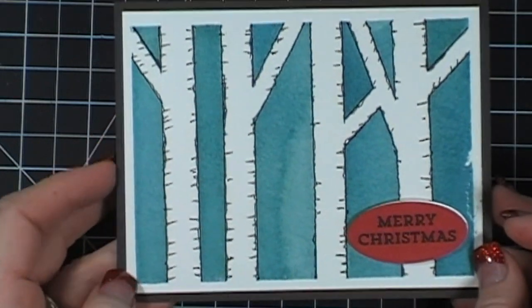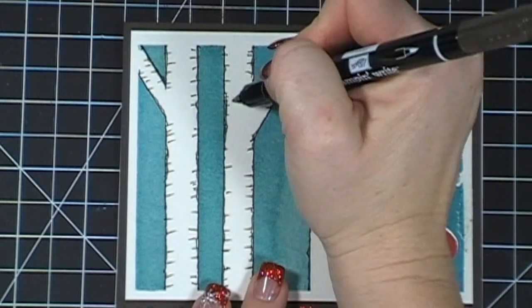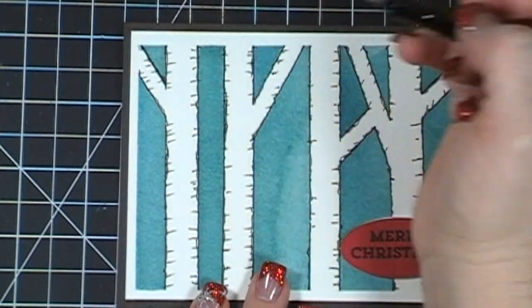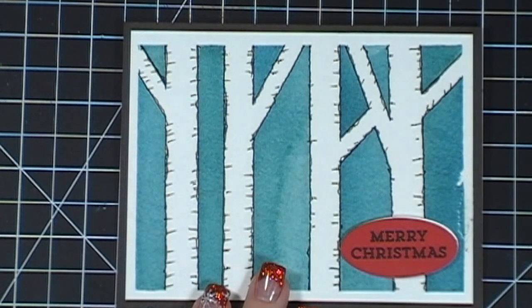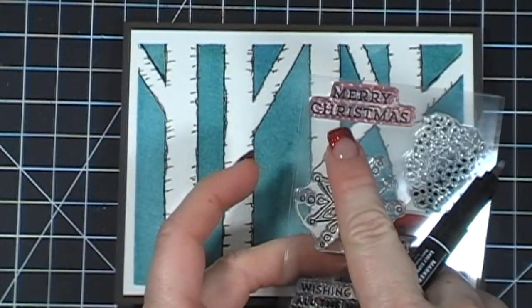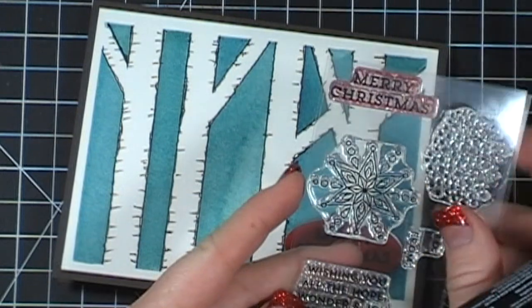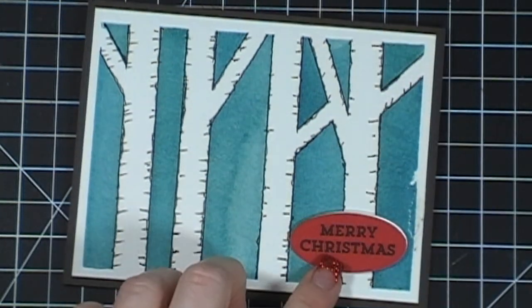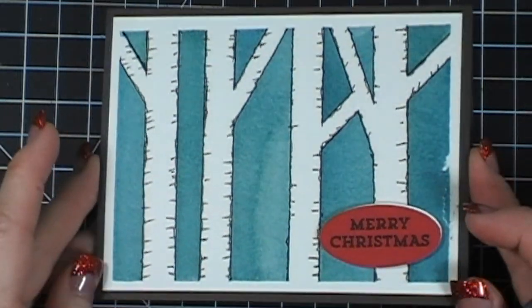Isn't that beautiful? I love it. I love how it turned out. And like I said, that's all I did is I just went into each one of those and made the little squiggles and made the little lines. And then this sentiment is from the Paper Pumpkin stamp set for this month. I love this stamp set. There's a Merry Christmas stamp, and so I stamped it on red and put it there. And that's it, that's our card.